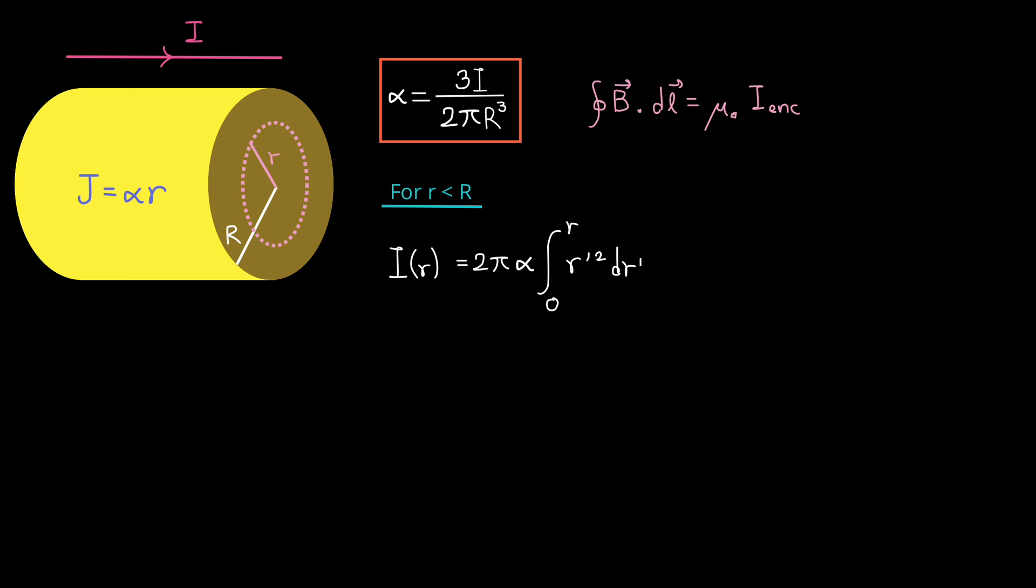Because we need to know the enclosed current within this path, we need to come up with an expression for the current as a function of r. And we can actually use our integral from the previous calculation. To avoid confusion, I changed the integration variable from r to r prime. Because now the lowercase r will be our upper bound for the integral.